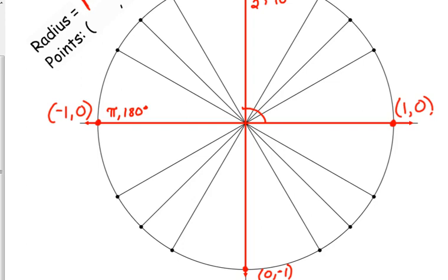To the negative x-axis, that's 180 degrees or pi in radians. To the negative y-axis, that is 3 pi over 2 or 270 degrees. And the positive x-axis can be labeled with four numbers: zero radians, zero degrees if we start and stop in the same spot, or two pi radians and 360 degrees if we go all the way around.